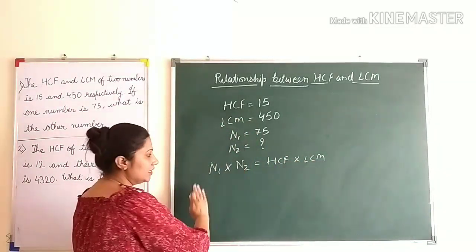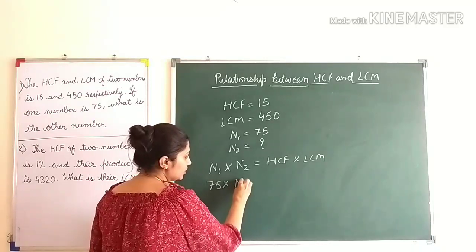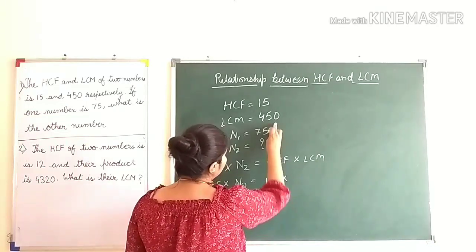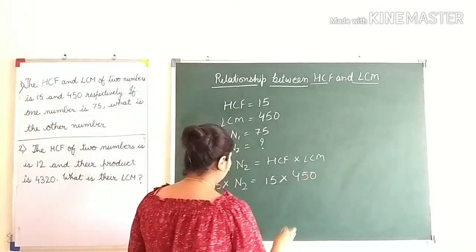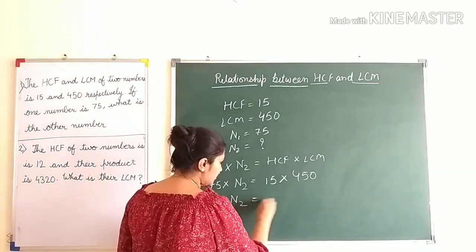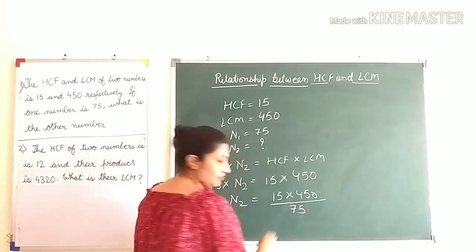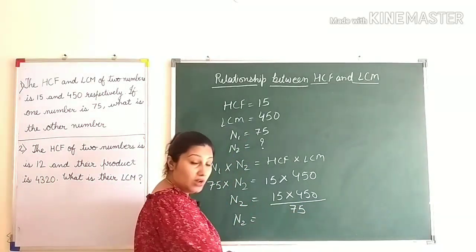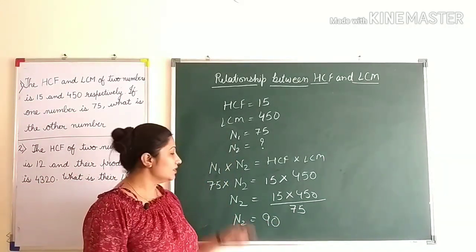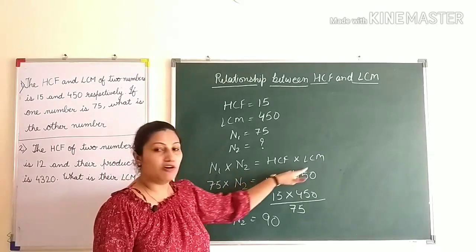Substituting the known values into the formula: N1 is 75, the other number is N2 (unknown), HCF is 15, and LCM is 450. Rearranging, N2 = (15 × 450) ÷ 75. Solving this, the other number is 90. Using this formula, we can calculate any one unknown quantity if we know the other three quantities.